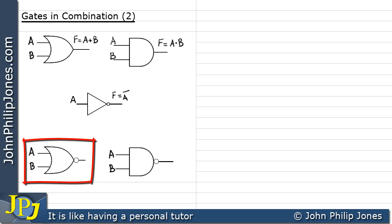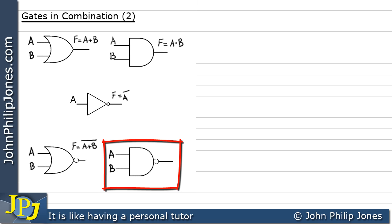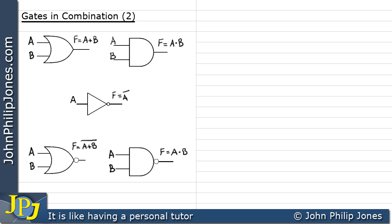If we look at the two-input NOR gate, then the output expression is F equals NOT(A OR B), all NOTted. And this gate is an example of a NAND gate, where the output is F equals NOT(A AND B), all NOTted.